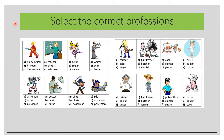Let's complete the exercises. What's his job? He's a fireman. What's her job? She is a teacher. What's her job? She is a dancer. What's his job? He is a waiter. What's his job? He is a singer. What's his job? He is a hairdresser. What's his job? He is a painter.